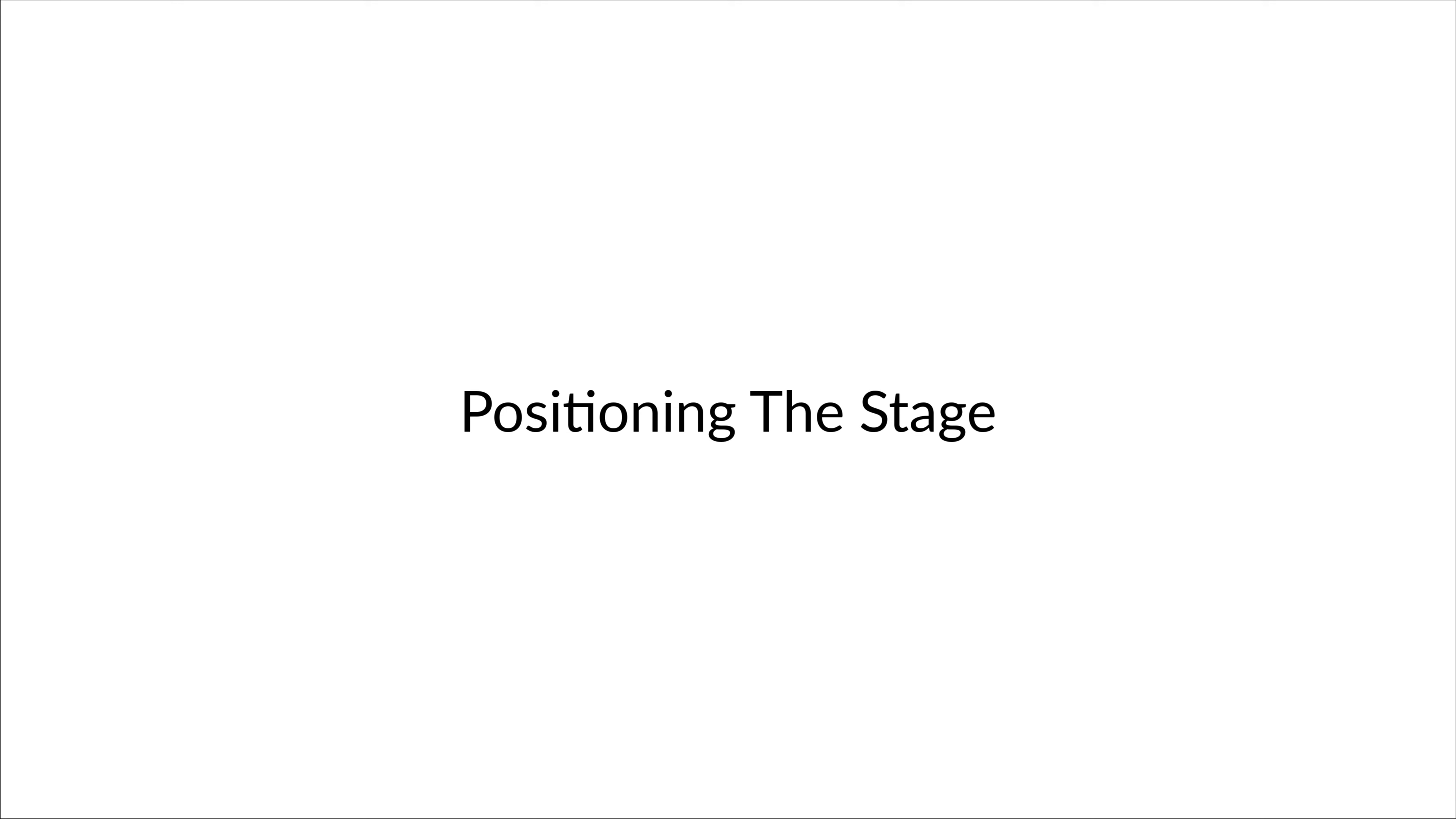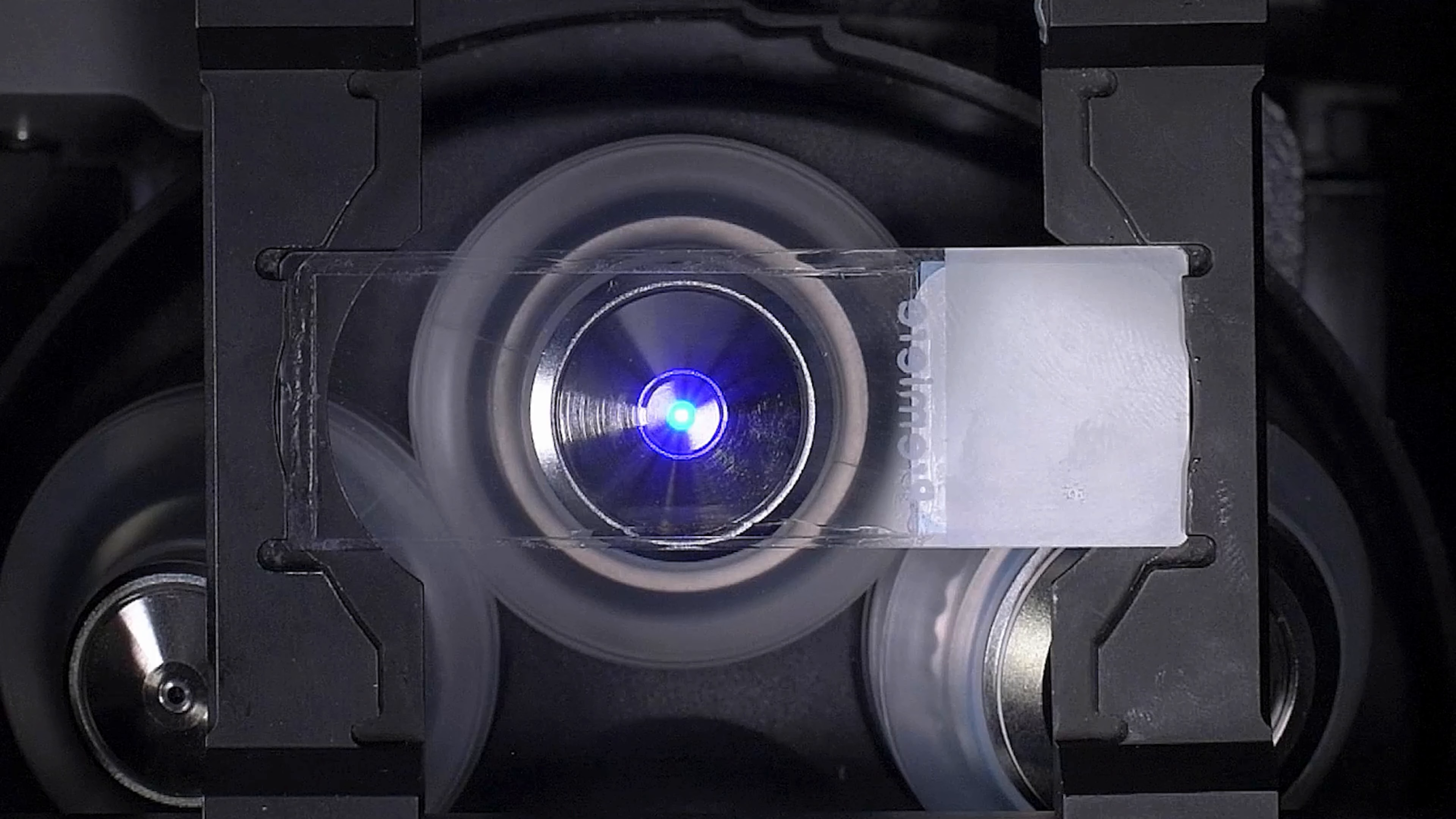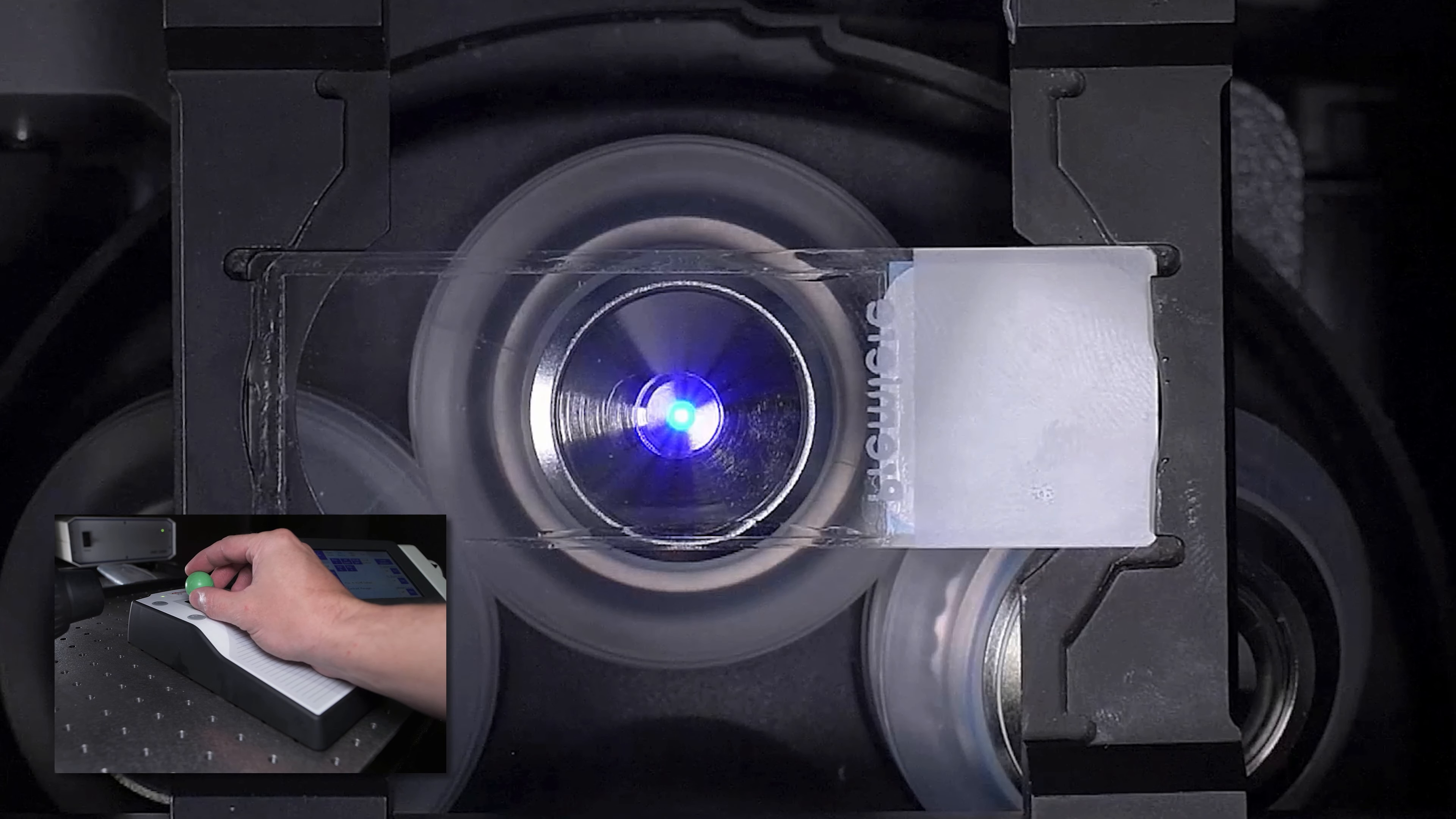Once we have our specimen mounted and focused correctly, we can use our motorized stage to move to different areas on the slide as necessary. High NA immersion objectives often come with very small working distances, on the order of a few hundred microns or less. So we need to be very careful about how far and how fast we move our stage.